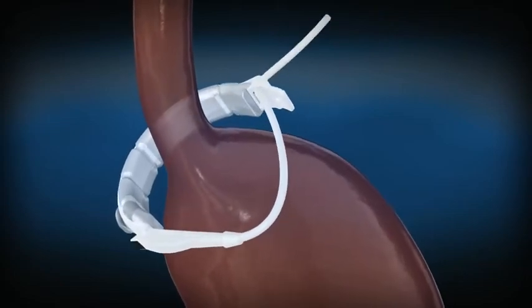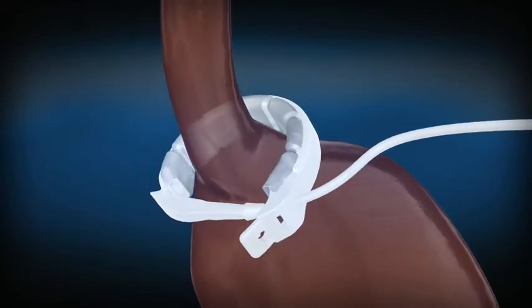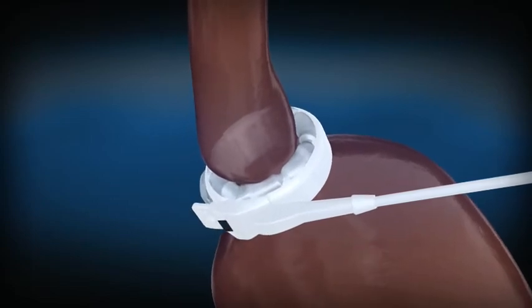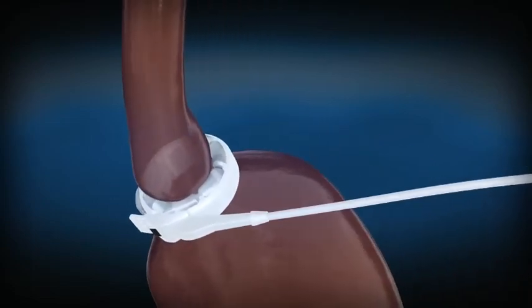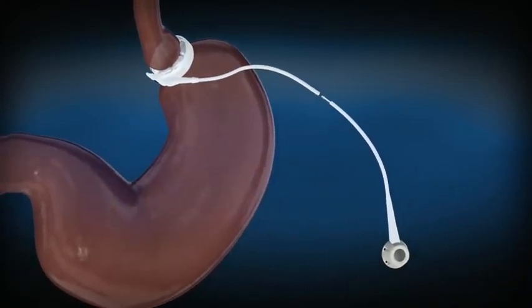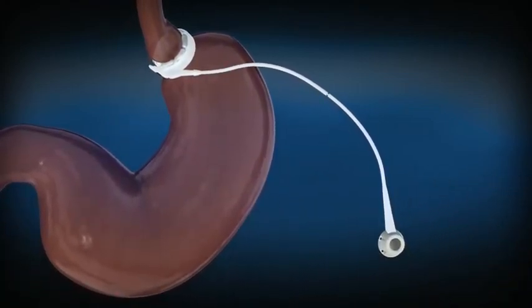This creates a small upper stomach pouch and a narrowed outlet between the new upper pouch and lower stomach. The LapBand system is connected by a tube to an access port fixed to the muscle wall just below the skin of your abdomen.